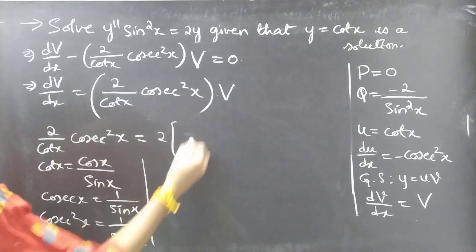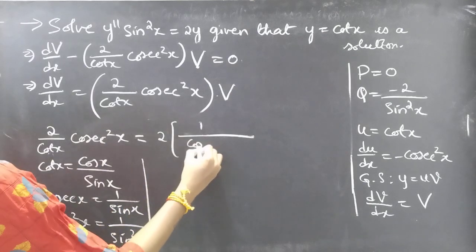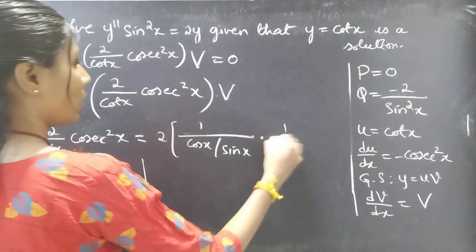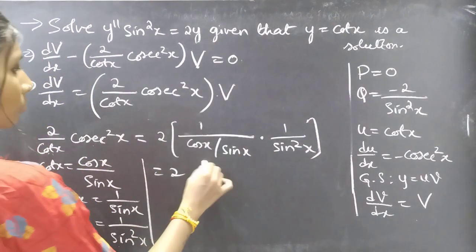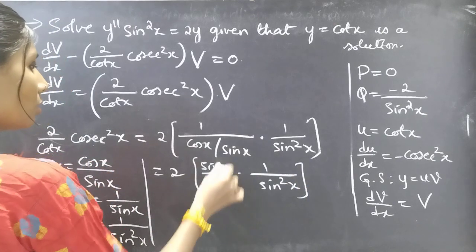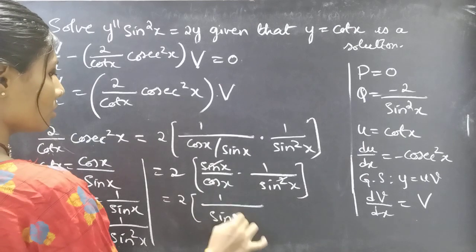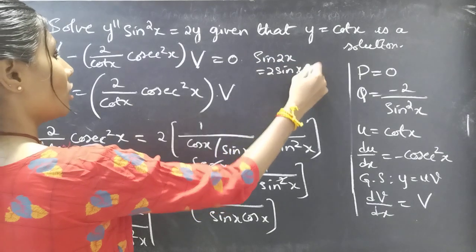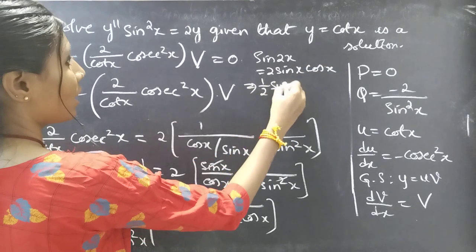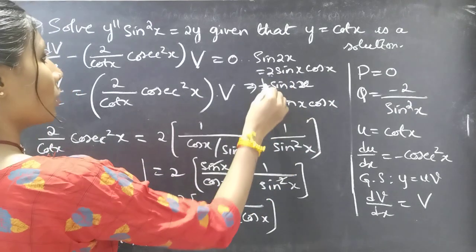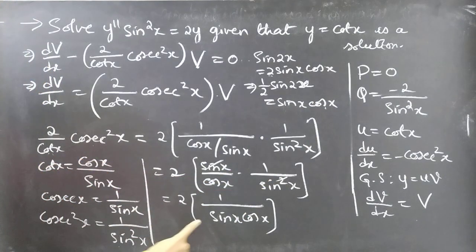Then (2/cot x)·cosec²x = 2·(sin x / cos x)·(1/sin²x) = 2/(sin x · cos x). Since sin 2x = 2 sin x cos x, we have sin x · cos x = (1/2)sin 2x, so 2/(sin x cos x) = 2/(½ sin 2x) = 4/sin 2x.